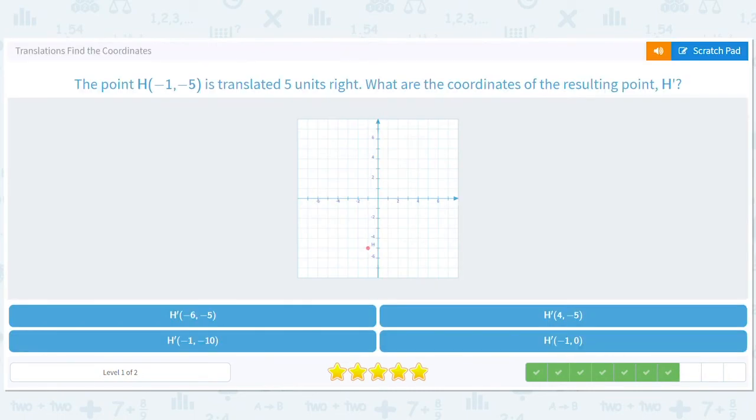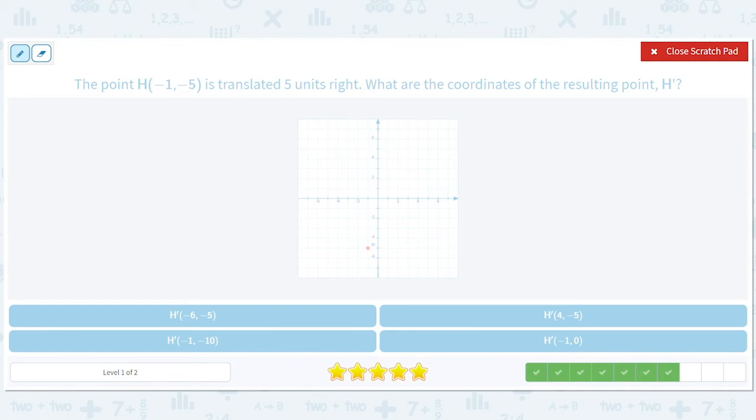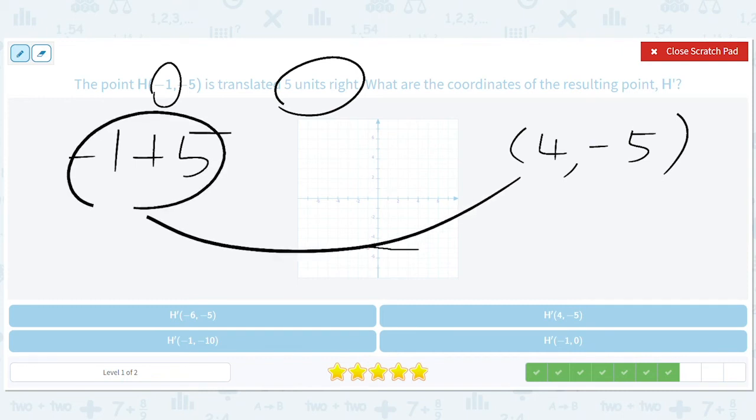Cool. This is a fun one. I like the ones that involve pictures. So negative one, negative five is translated five units to the right. So we're going to take this thing and we're going to move there. And you can see that that's four comma negative five if you'd like, just to do it with the graph. But you can also say, hey, I'm moving five units to the right. That means I need to affect the x in a positive way. So negative one plus five. And that's going to give me this four over here. So I'm going to end up with four, negative five.